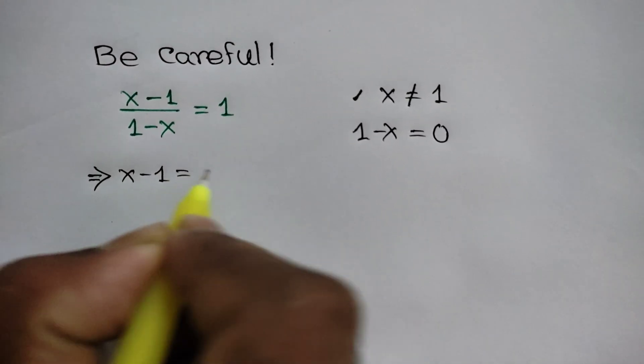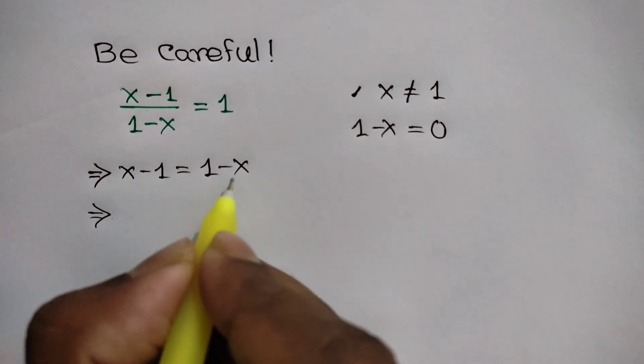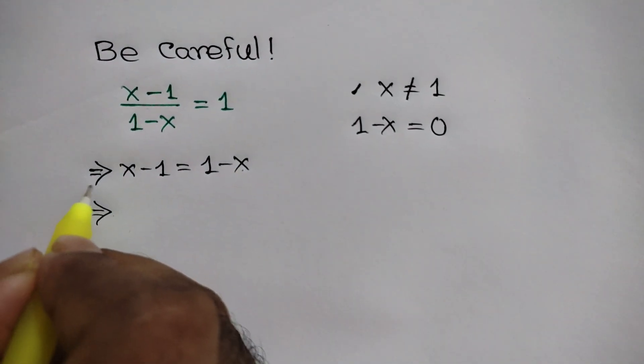Now taking this negative x to the left side and taking this negative 1 to the right side, we will get x plus x is equal to 1 plus 1.